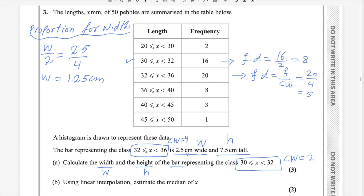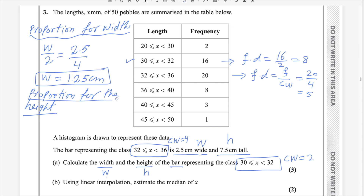Because we are using the units of centimeters, the width is in centimeters. Now we will take the proportion for the height. Height is along the frequency density of the histogram — height depends on frequency density, while width depends on class width. We take the proportion: height H divided by frequency density of this class (8) equals height of the other bar (7.5) divided by frequency density of the other class (5).